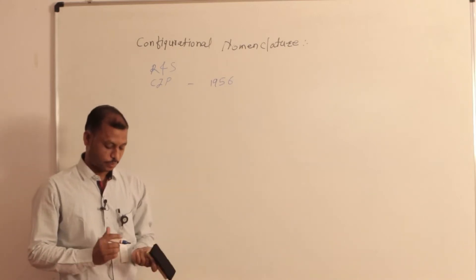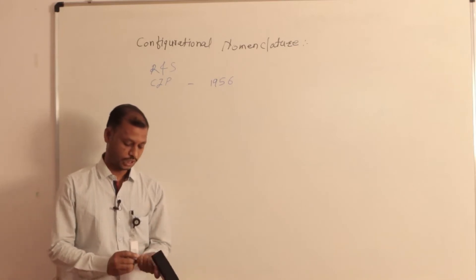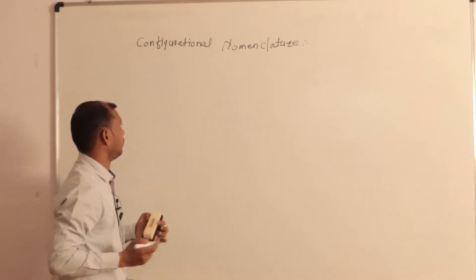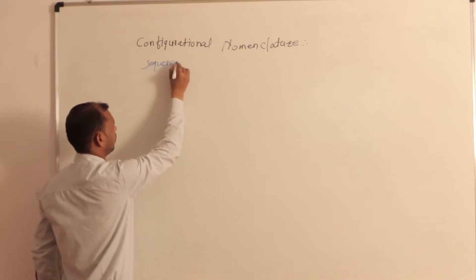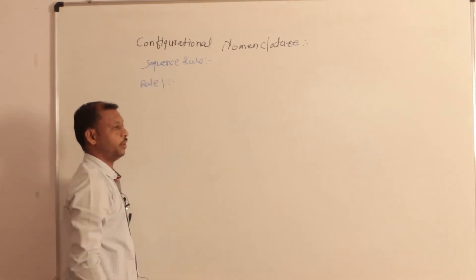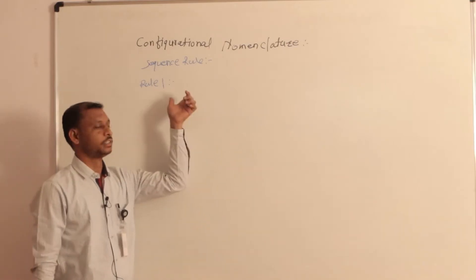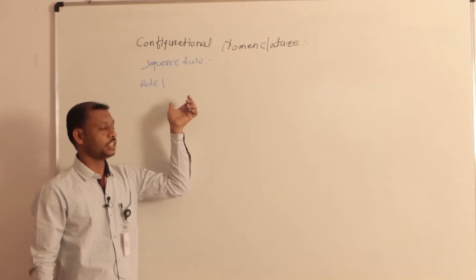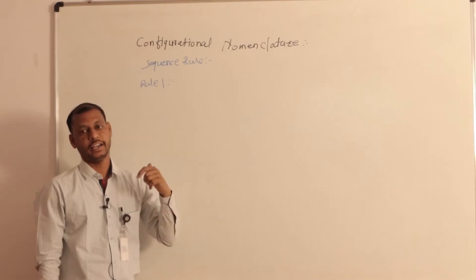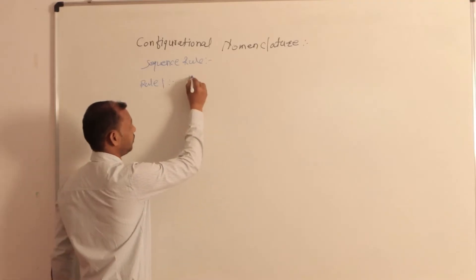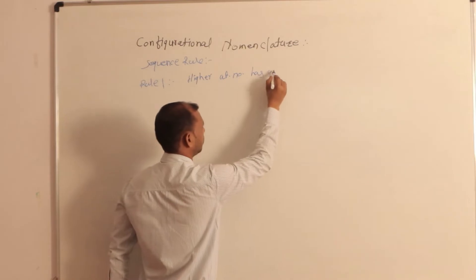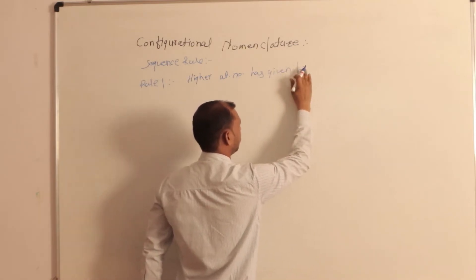We want to see how this nomenclature is assigned for optical isomers. There are some rules, also called sequence rules. Rule first: give the sequence, also called priority. That sequence is given to the atom which is directly attached to the chiral carbon and which has higher atomic number. Higher atomic number gets first priority.